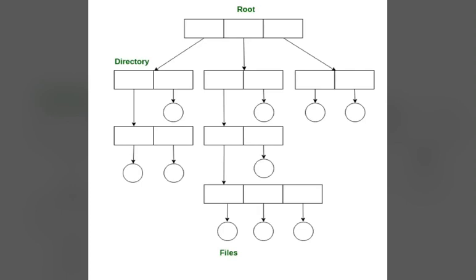An important point to note: a shared file is not the same as a copy. If any programmer makes changes in the subdirectory, it will reflect in both subdirectories. For examination, draw the diagram and write the definition: an acyclic graph is a graph with no cycles and allows sharing of subdirectories and files. It is used when the same files need to be accessed in more than one place.